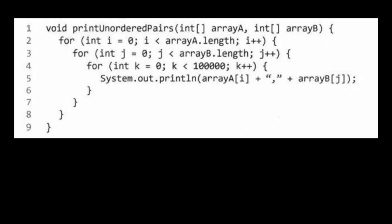The third problem is similar to the last but has three for loops. Someone glancing at this might say it's O(n³), but that would be wrong. Let's look at the inner for loop: k starts at zero and iterates until k reaches 100,000, just printing something. Remember — time complexity is based on whether the algorithm changes with the input. No matter how big our arrays are, this loop always counts to 100,000. So this inner for loop is actually a constant time operation and we don't consider it in our Big O.